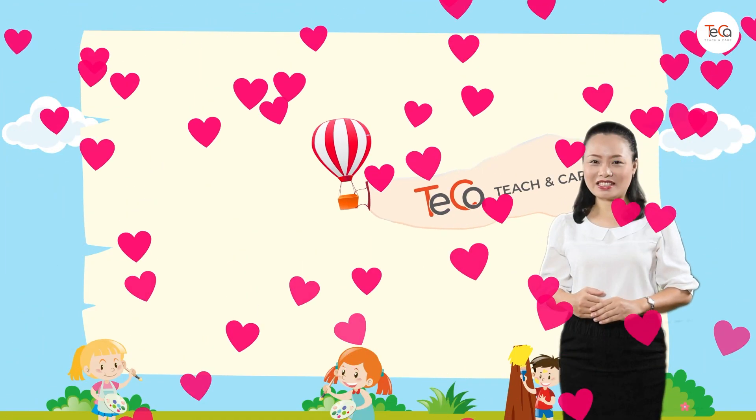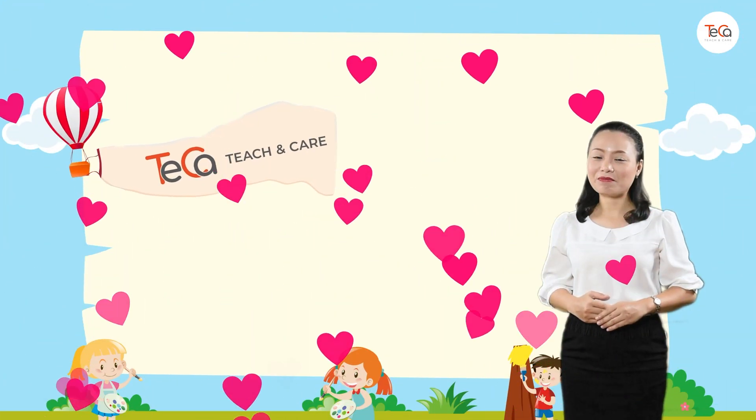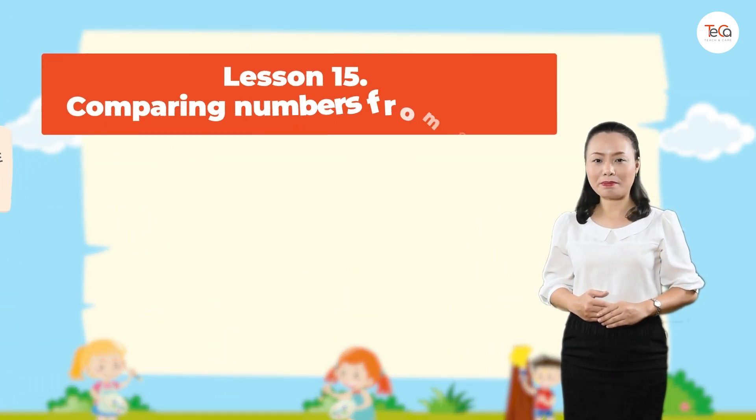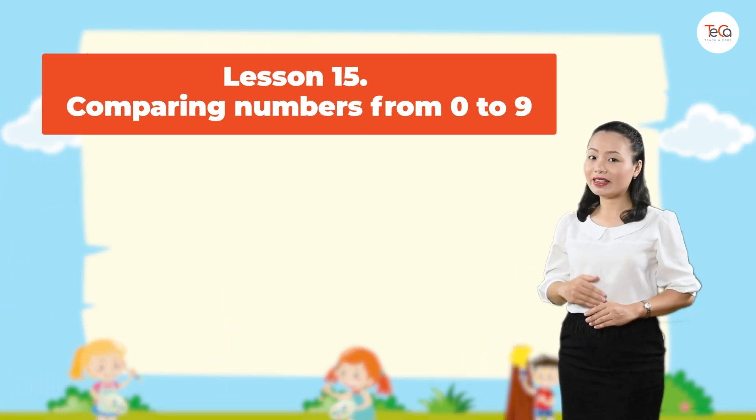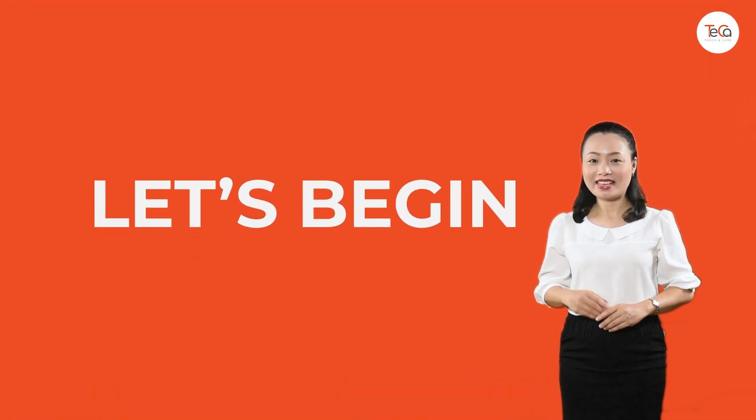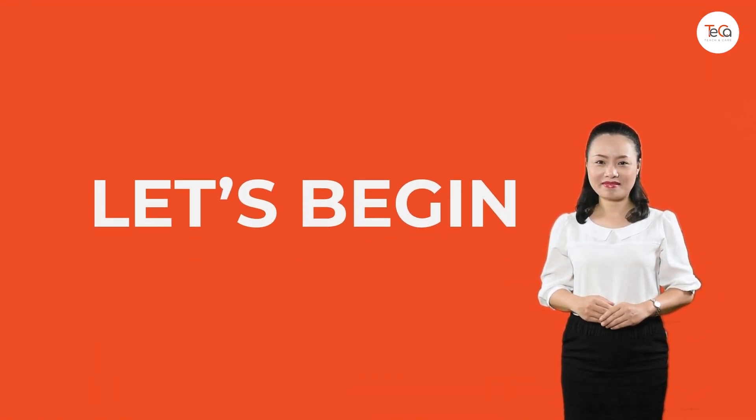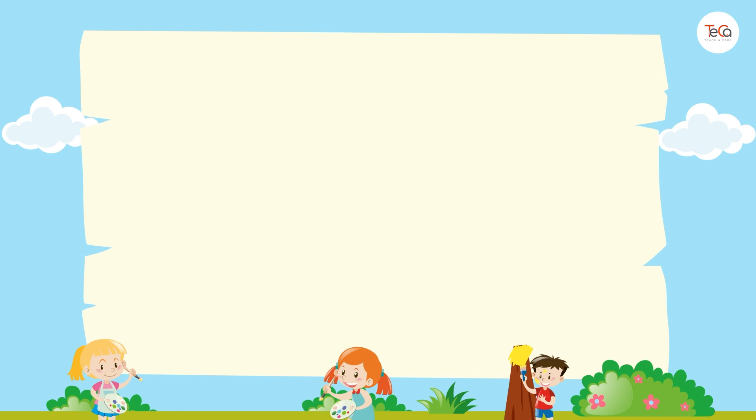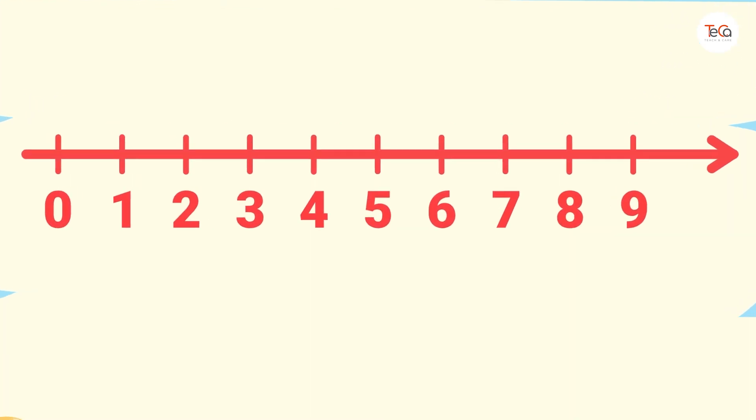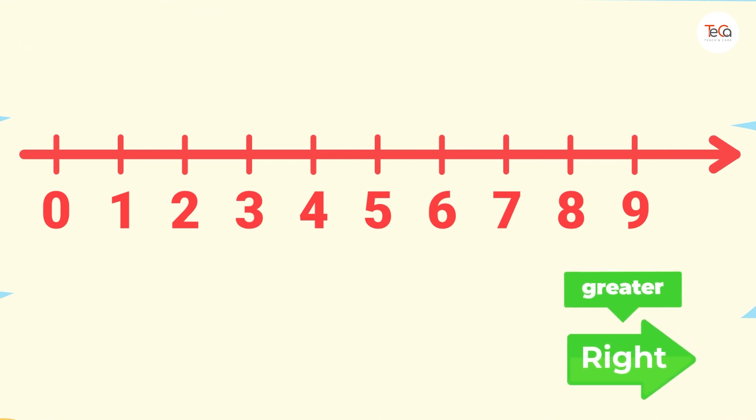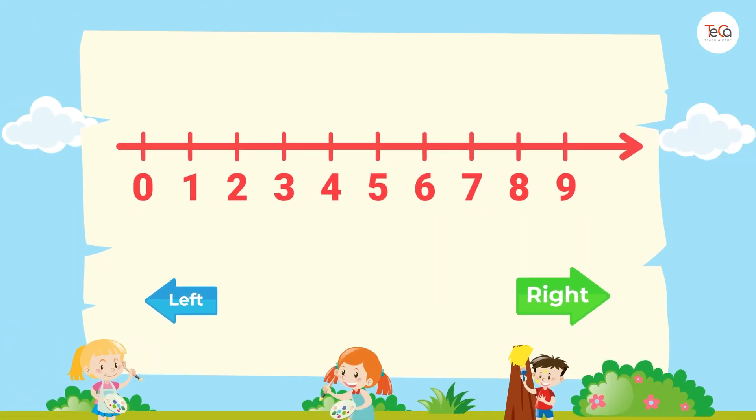Hello kids! In this lesson we are learning to compare numbers from 0 to 9. Are you ready? Stay tuned! So, let's review the number line. On the number line, a number to the right is greater than a number to the left. And a number to the left is less than a number to the right.